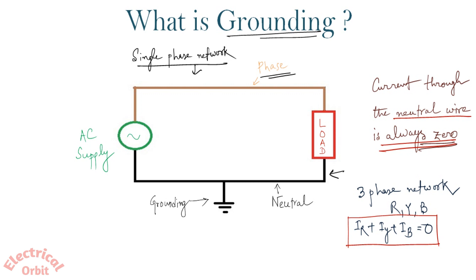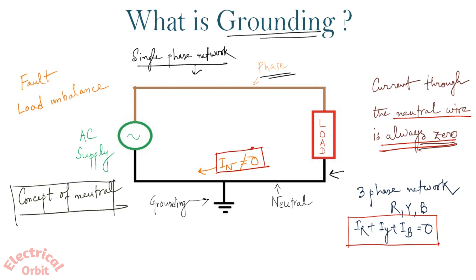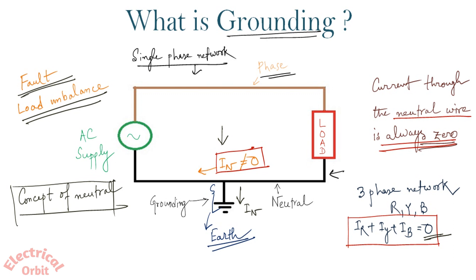So we say the current through a neutral wire is always zero. But if any situation occurs due to fault or load unbalance where we get current flowing through this neutral — that means IN is not equal to zero — then people touching this neutral wire get electrified or get a shock. This violates the concept of neutral, where the current should always be zero. So due to this unwanted situation of fault or load unbalance, that neutral current IN should go to the ground if we connect this neutral to the earth.